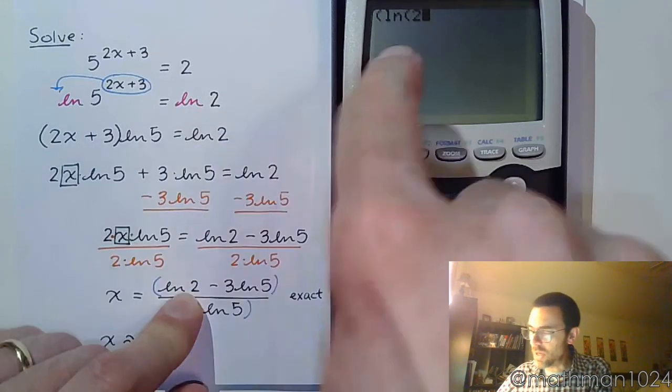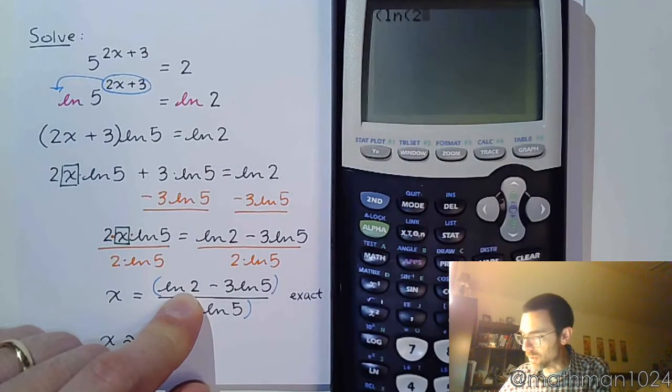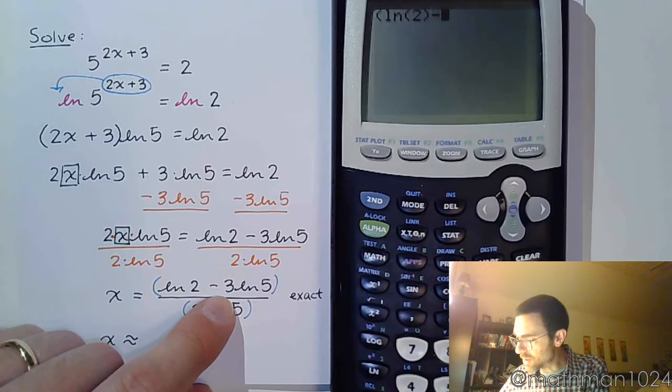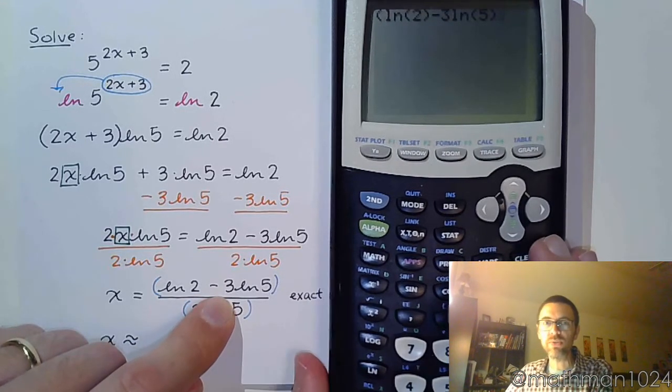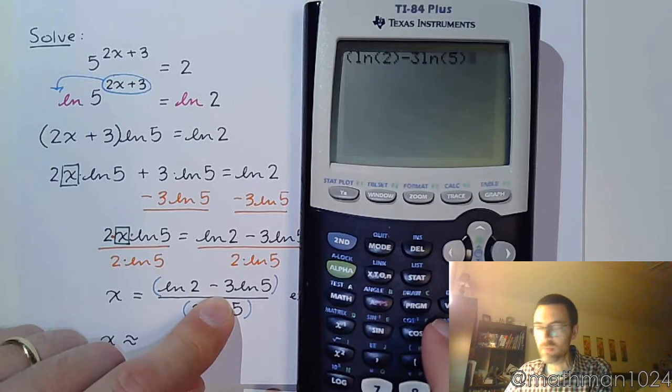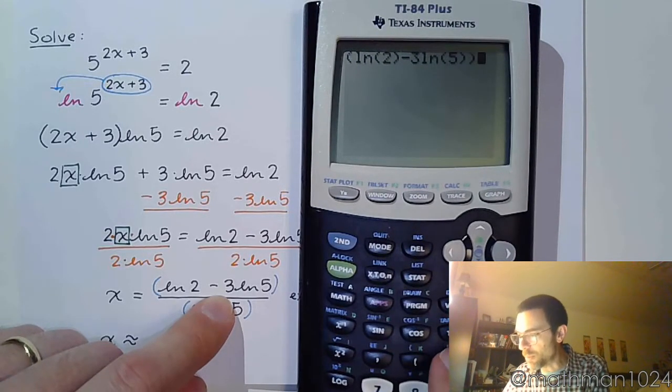Again, notice that natural log has its own set of parentheses. So close that. Minus 3 natural log of 5. I'm going to close parentheses for that natural log. I'm going to close parentheses for my big fraction.